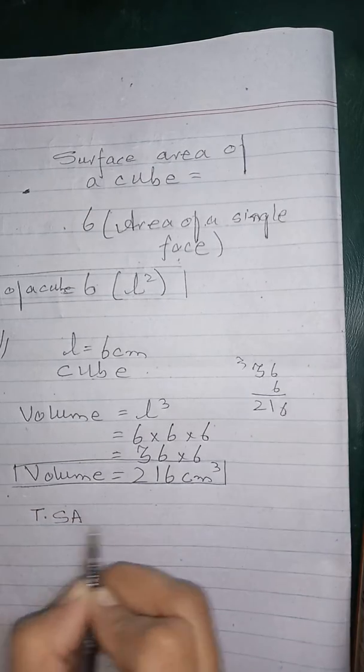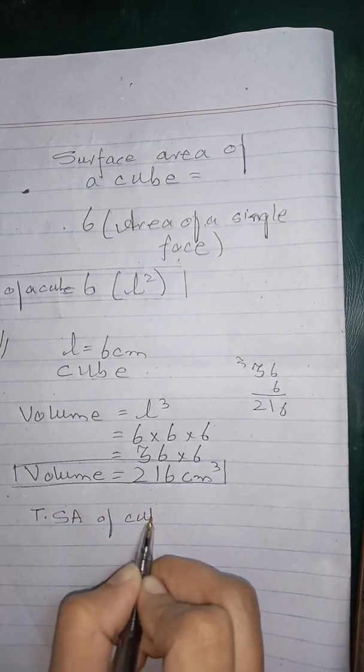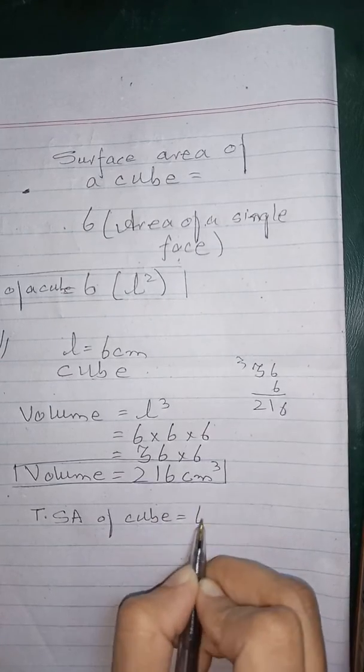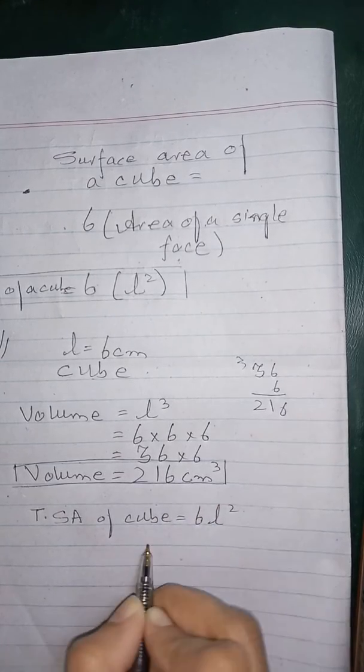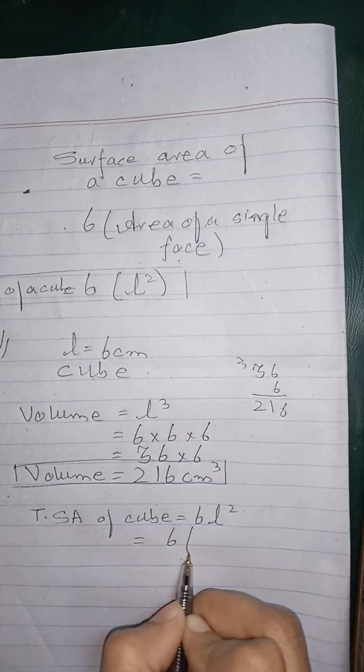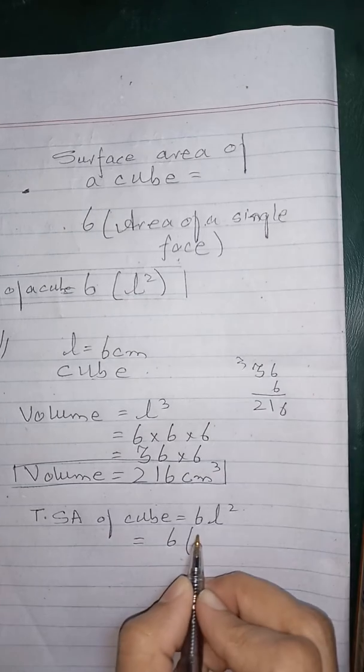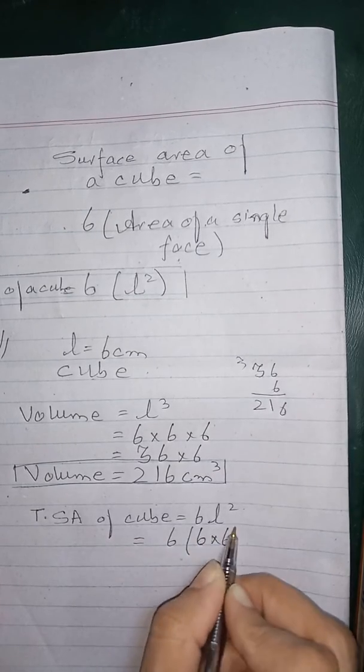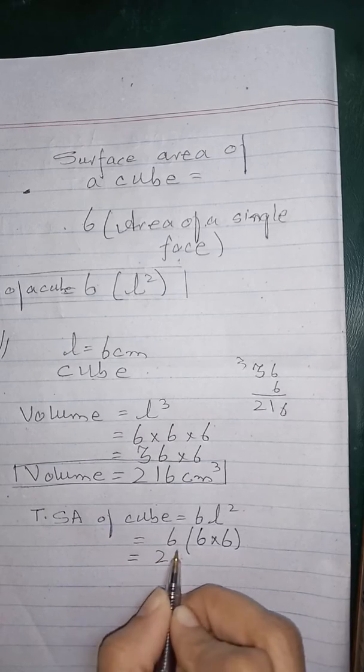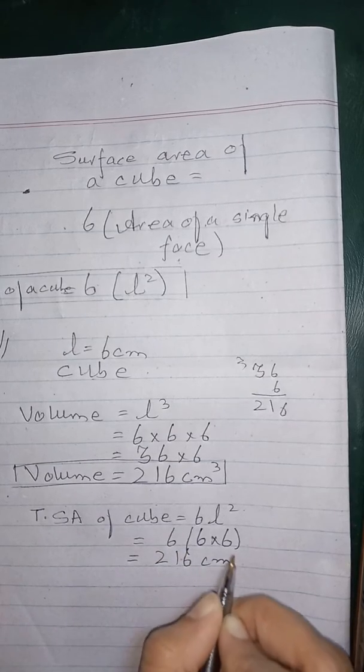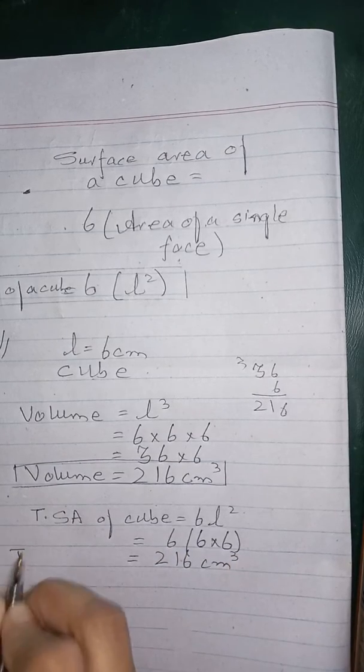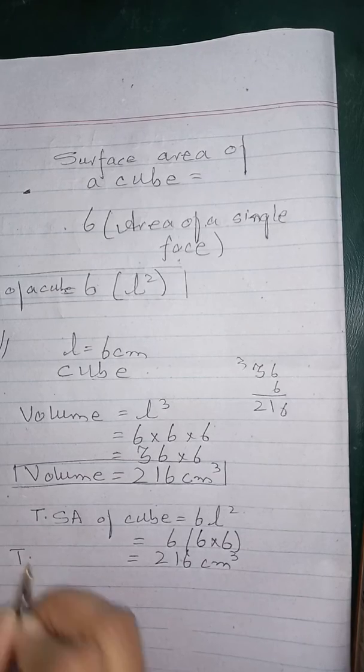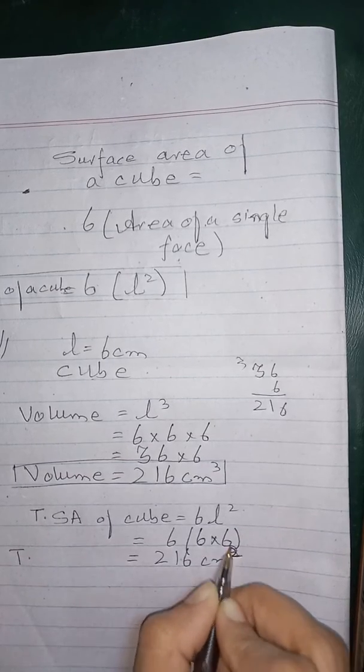The total surface area of this cube is 6 L square, 6 times 6 square. For this cube it will be 6 times 36, 216 cm square. Total surface area of cube is 216 cm square.